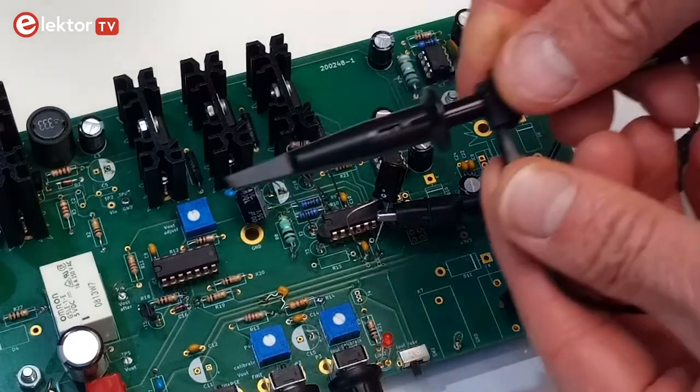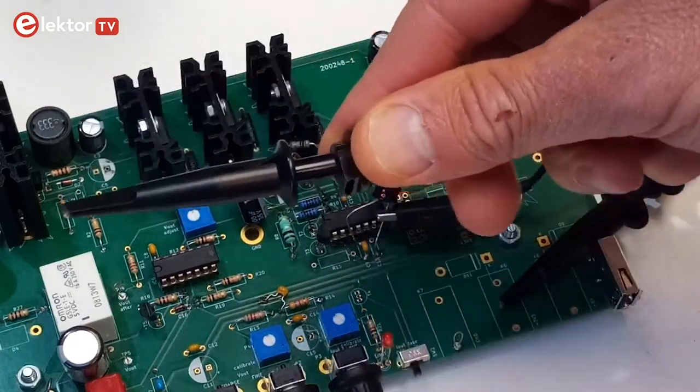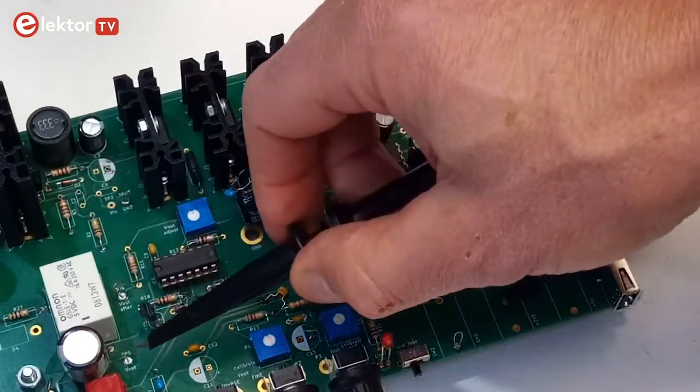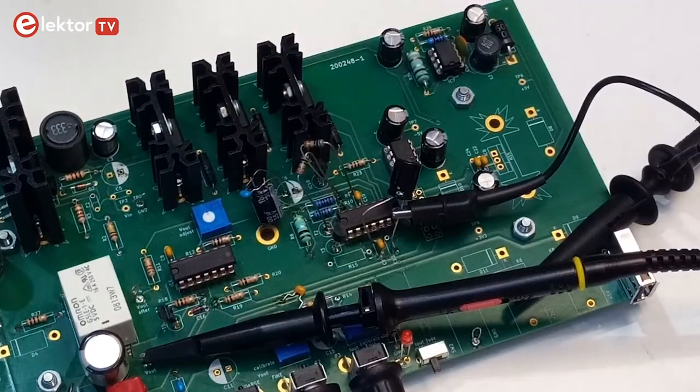It can even be convenient to use the crocodile clip of a second probe just for connecting to ground, so you can remove the crocodile clip of the measuring probe and keep it out of your way.